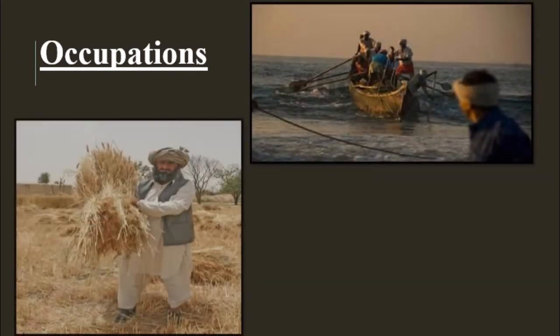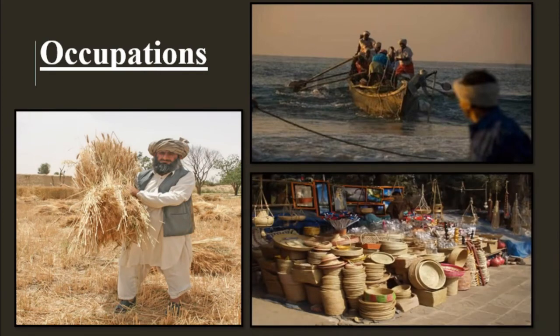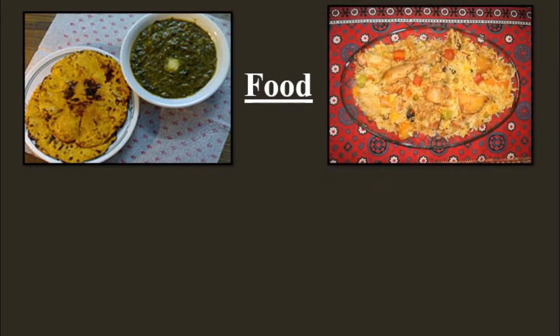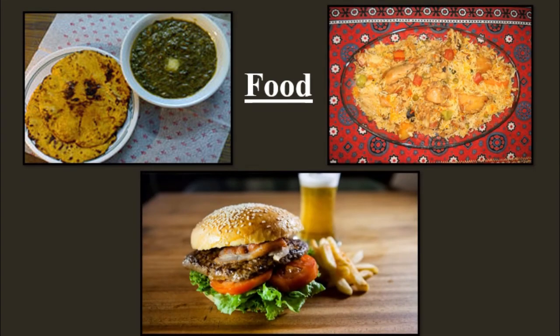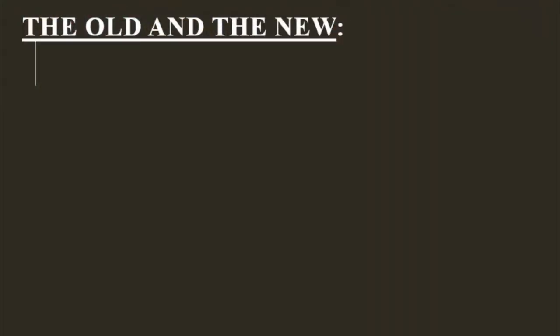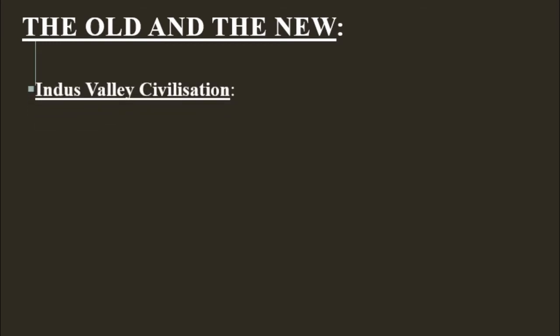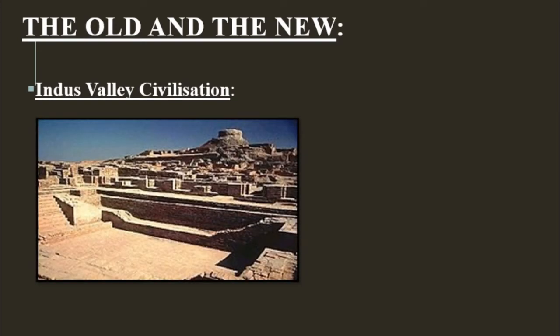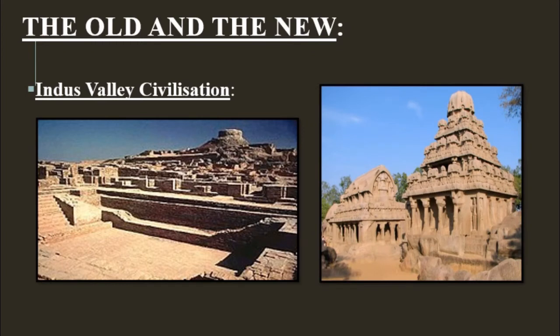Here you can see some pictures showing different occupations of people living in Pakistan, and here you can see some pictures showing famous foods in Pakistan. Pakistan is a land where great civilizations such as the Indus Valley Civilization existed in the past. In some places there are buildings or remains of buildings that remind us of our history and our ancestors, and help us learn about our past, which still influences our culture and traditions.